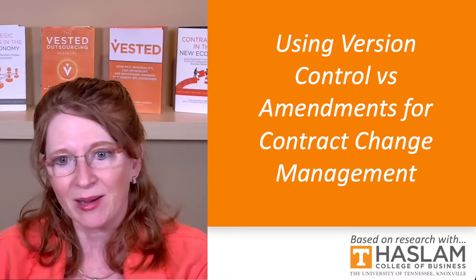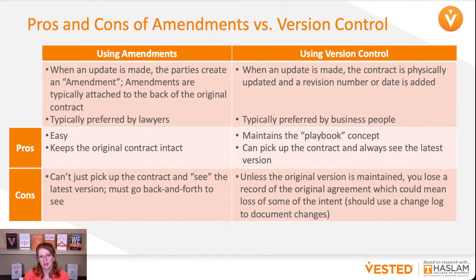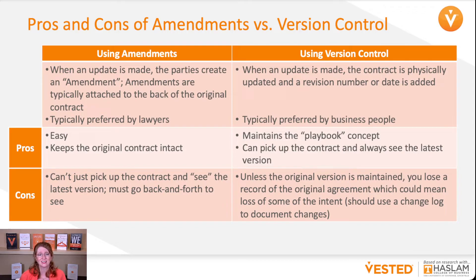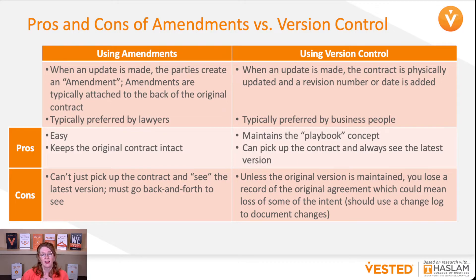In summary: an amendment is made by physically creating an addendum to the contract. This approach is typically preferred by lawyers — it's easy and it keeps the original contract intact. However, you can't just pick up the contract and see the latest version; you have to look across multiple documents. With version control, when an update is made, the contract is physically updated and the revision number is dated and added. This is typically preferred by business people. The benefit is it keeps your contract a living document — a playbook. You can pick it up and always see what the latest version is.